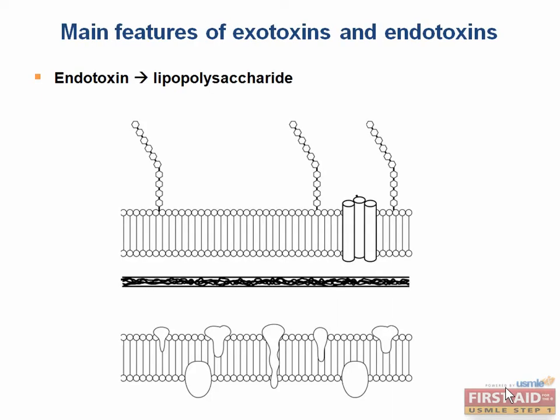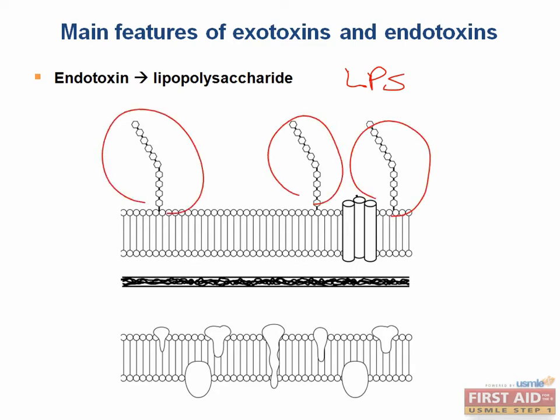You'll find a nice table that summarizes the main features of exo- and endotoxins in the book. The main thing to emphasize is that endotoxin is composed of lipopolysaccharide, LPS, and this is only found in gram-negative species. Here is the gram-negative cell wall, and you can see the LPS chains are attached to the outer membrane.